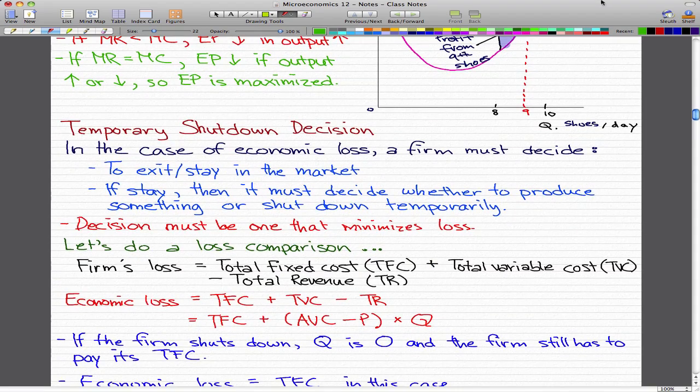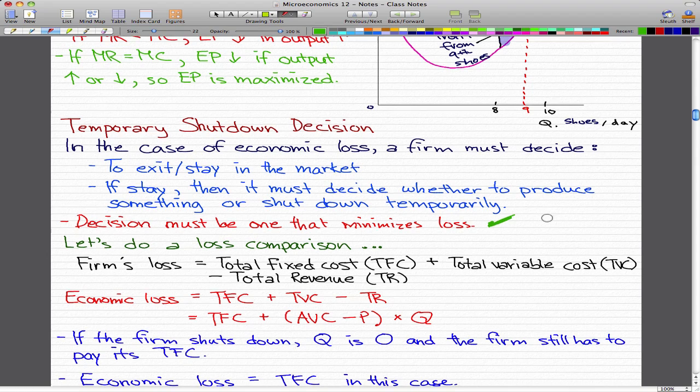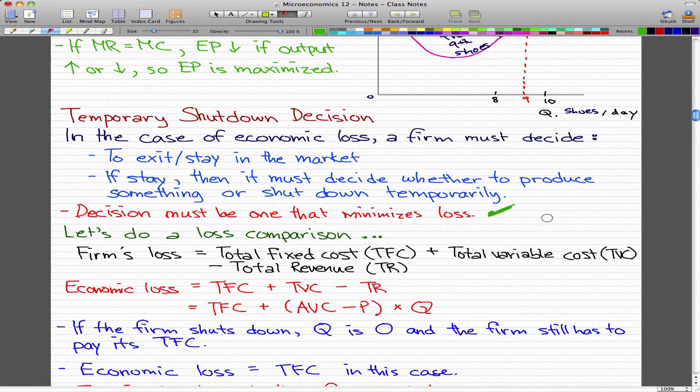Now we got to talk about some temporary shutdown decisions. If the firm makes an economic loss, then it must decide to exit the market or stay in the market. If we stay, then we must decide whether to keep on producing something or to shut down temporarily. This decision must be one that minimizes loss because we want the loss to be as small as possible.